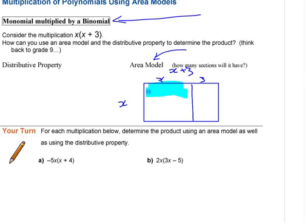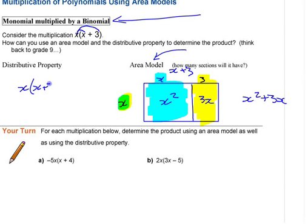And then if I want to know what this area is, I've got x times x - what is that? x squared. And then if I want x times 3, this one - x times 3, what's that? 3x. So my answer is x squared plus 3x. I know a lot of you were telling me in the past that I can see what it is. It's x times x and x times 3. That's fine. x times x plus 3 is x times x plus 3 times x, or in other words x squared plus 3x.